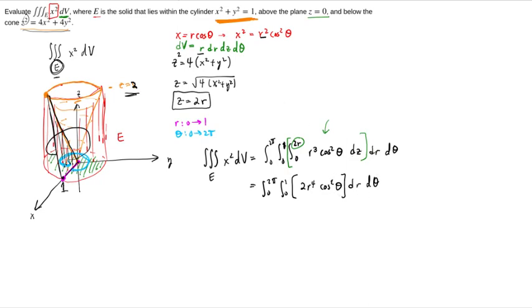And now this one is separable. So the r variables can be separated into one integral, the thetas into their own integral. And at this point, we break it up, we compute. So this is integral zero to two pi, cosine squared theta d theta, times the integral from zero to one, two r to the fourth d r.